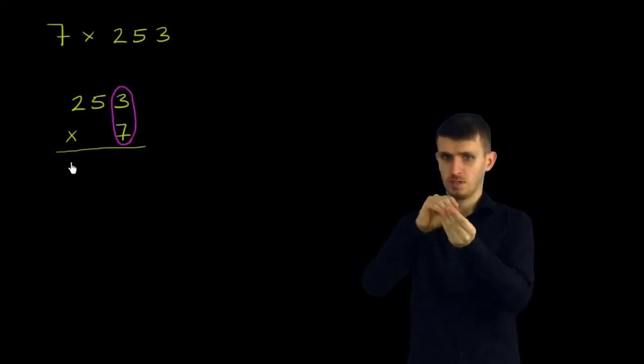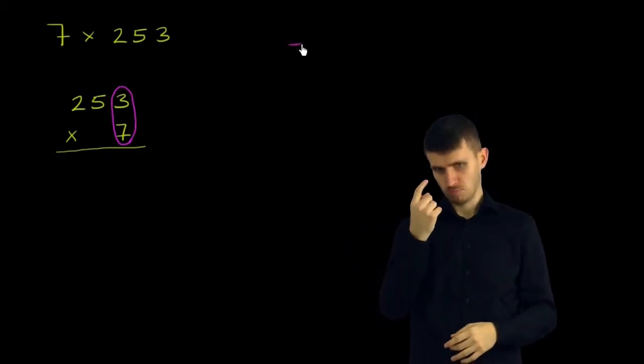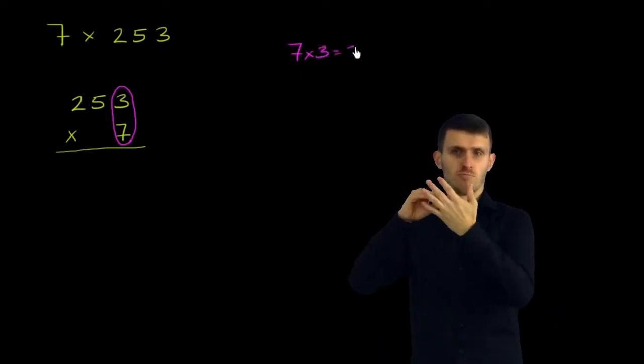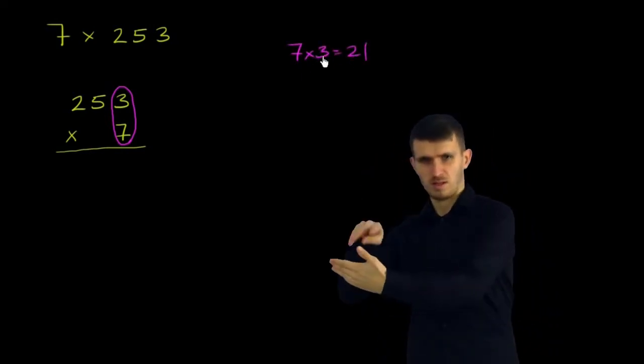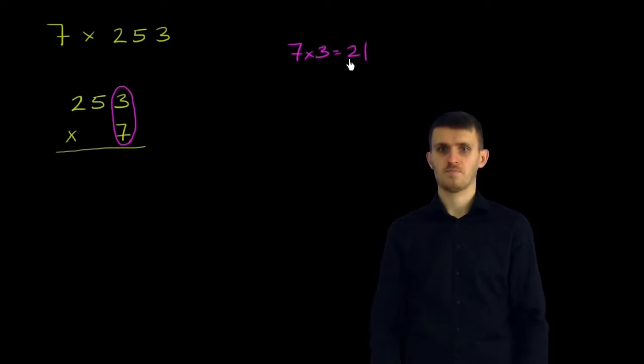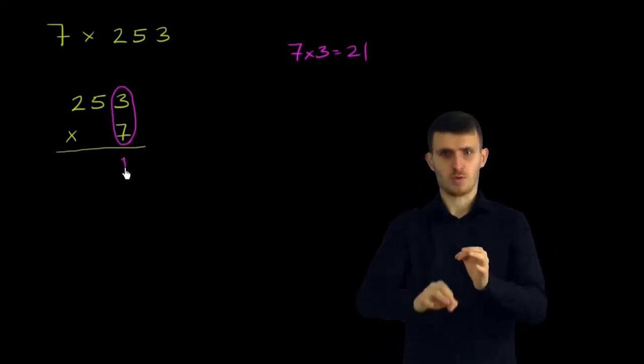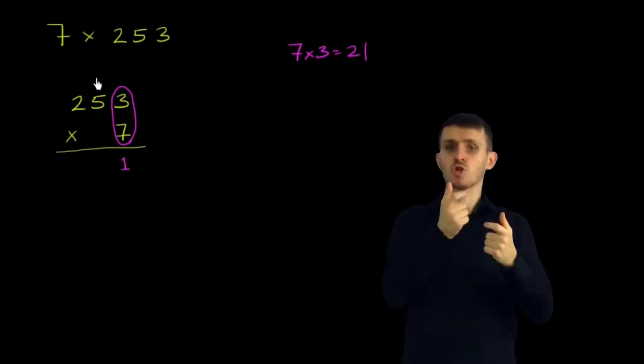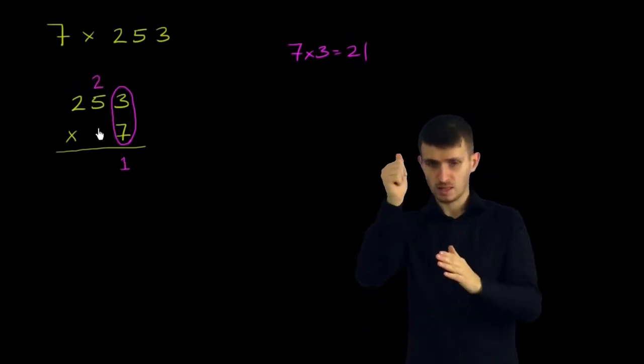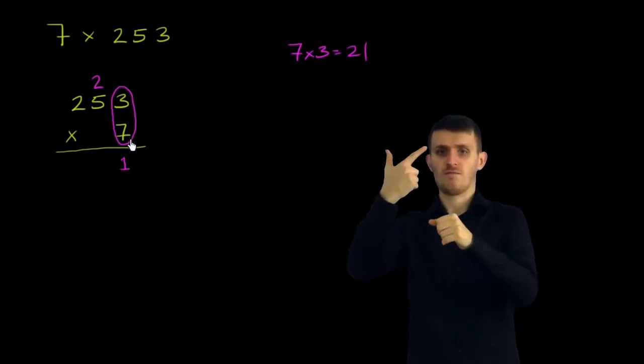So first I start with 7 times 3. Well, 7 times 3 we know is 21. Let me write that down. 7 times 3 is equal to 21. You could do this part in your head, but I just want to make it clear where I'm getting these numbers from. What I would do in the standard method is I would write the 1 in 21 down here, but then carry the 2 to the tens place.